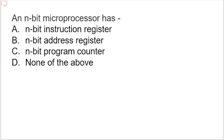Next question: an n-bit processor has what? Options are: n-bit instruction register, n-bit processor register, n-bit program counter, or none of the above. The correct option is n-bit instruction register.